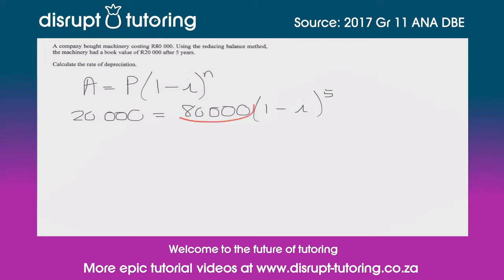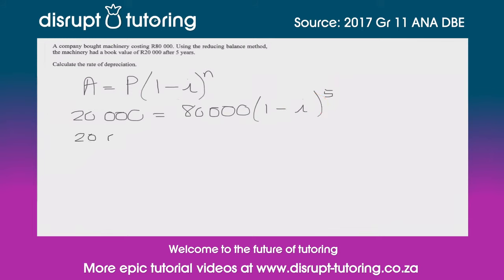Now let's figure this one out. We'll first divide both sides by 80,000 because our goal is to get i by itself. So we're going to say 20,000 over 80,000 equals (1 minus i) to the power of 5. Now we need to try and get rid of that 5.